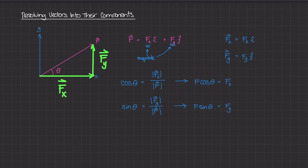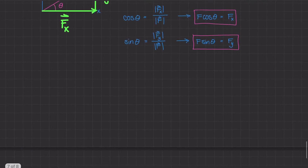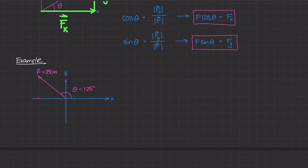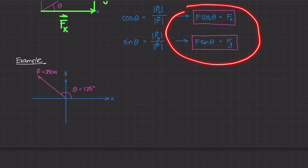To put this into practice, let's do a quick numerical example. We have force vector F with a magnitude of 290 N, making an angle of 125 degrees from the horizontal x-axis. We want to figure out Fx and Fy so that we can represent this force vector F in terms of its components — that is, the x-component Fx and the y-component Fy.